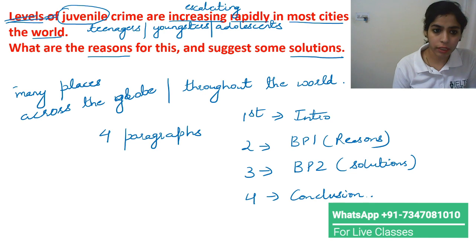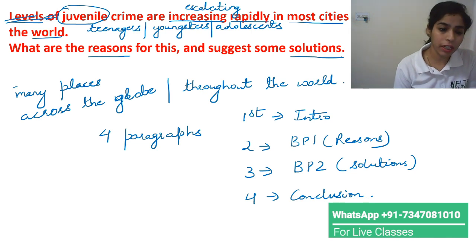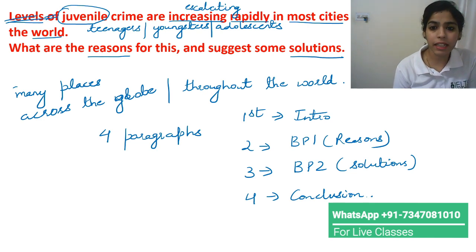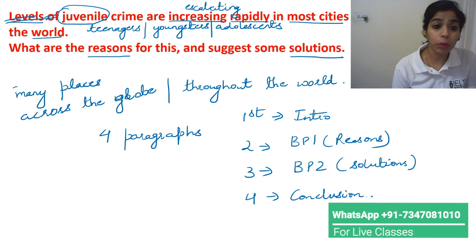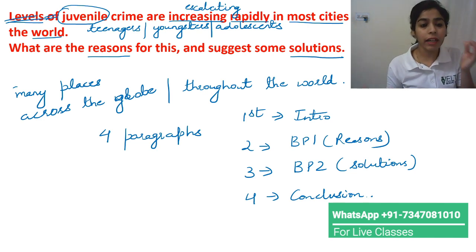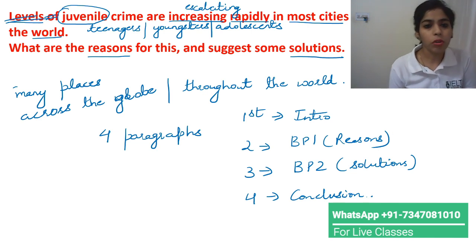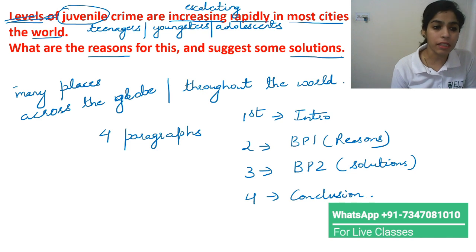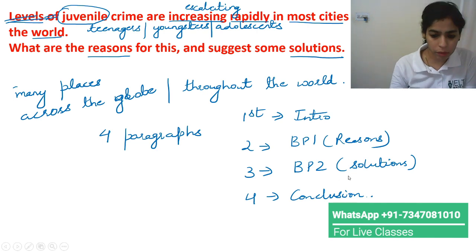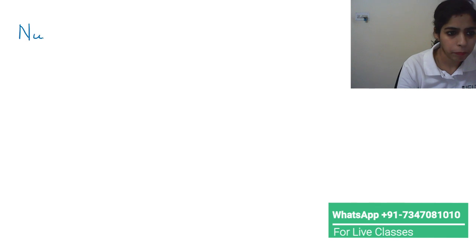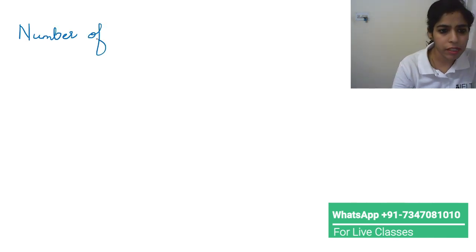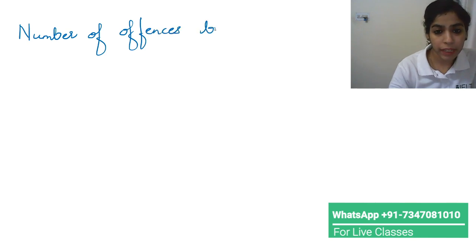How can we write the introduction? Instead of writing 'juvenile crime,' we can write 'crime among teenagers.' Crime among teenagers is escalating in many cities across the globe. We can also say the number of offenses by teenagers has been escalating at a fast pace in many cities throughout the world. So this is our paraphrasing of the question statement.